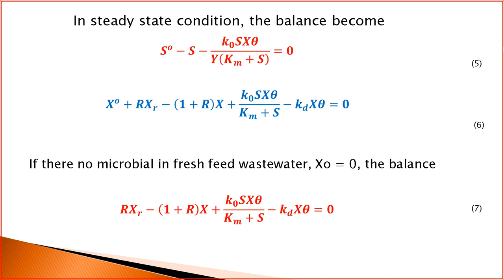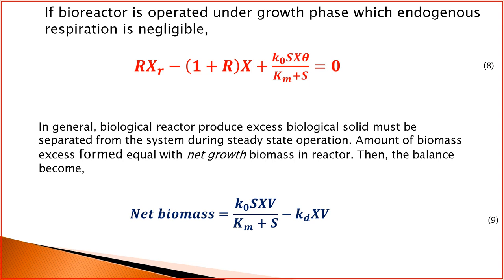If it is assumed that there are no microbes in the wastewater feed (X0 = 0), the balance becomes: r·Xr − (1 + r)·X + k0·S·X·theta / (Km + S) − kd·X·theta = 0. If the reactor operates in the microbial growth phase, endogenous respiration is neglected (kd = 0), so the biomass balance simplifies to: r·Xr − (1 + r)·X + k0·S·X·theta / (Km + S) = 0.